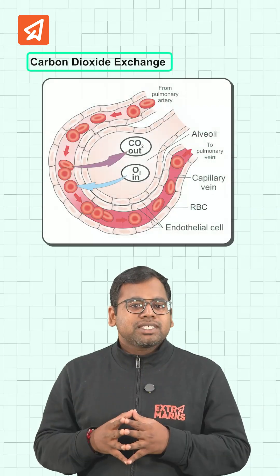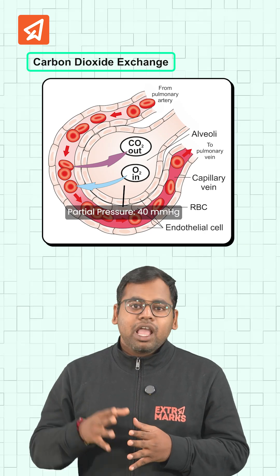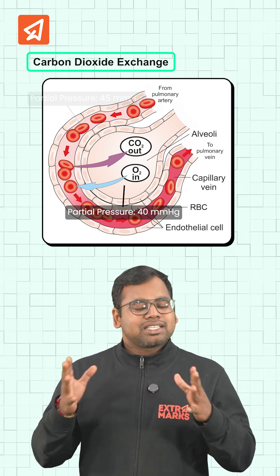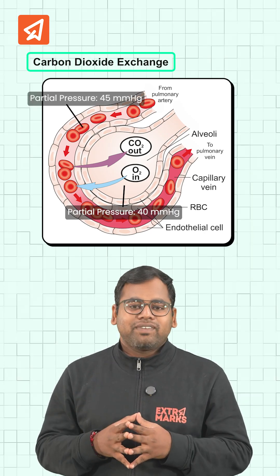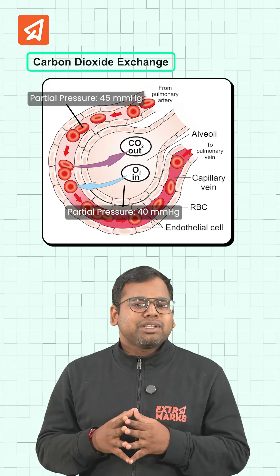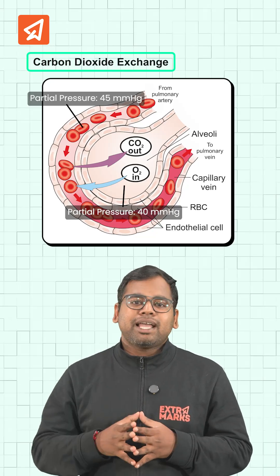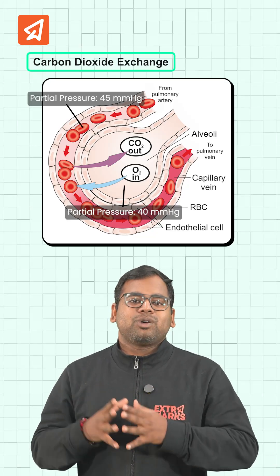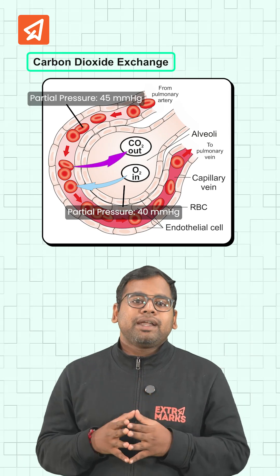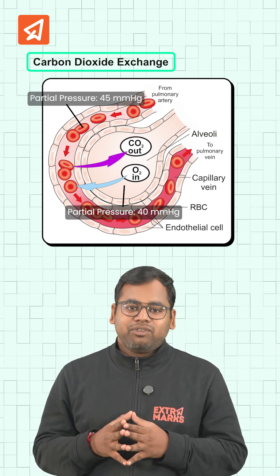For carbon dioxide, the alveolar partial pressure is 40 mmHg, while in blood coming from the tissues it's around 45 mmHg. This gradient is much smaller, but carbon dioxide is 20 times more soluble in plasma than oxygen, so diffusion still rapidly happens from blood to alveoli.